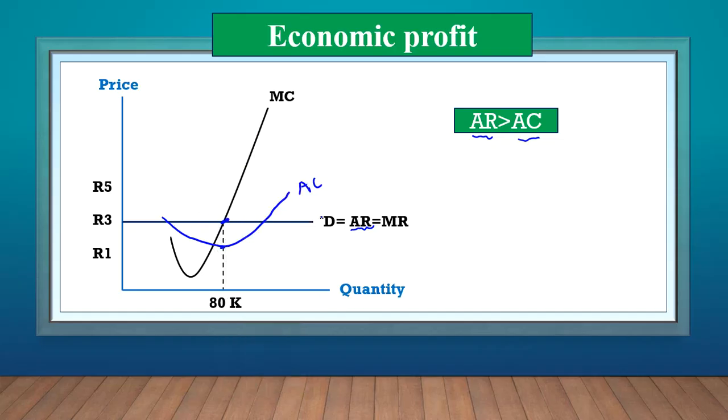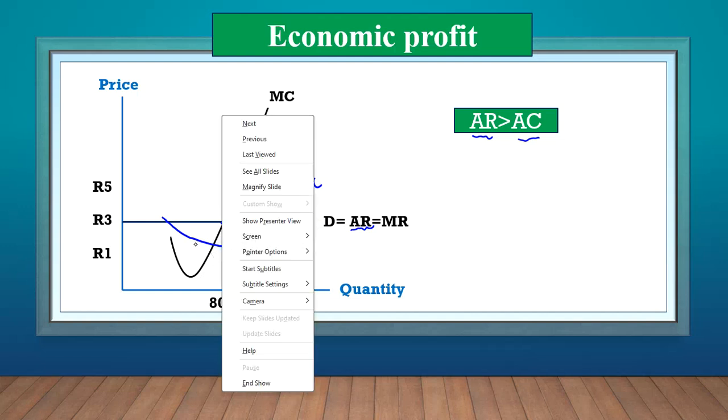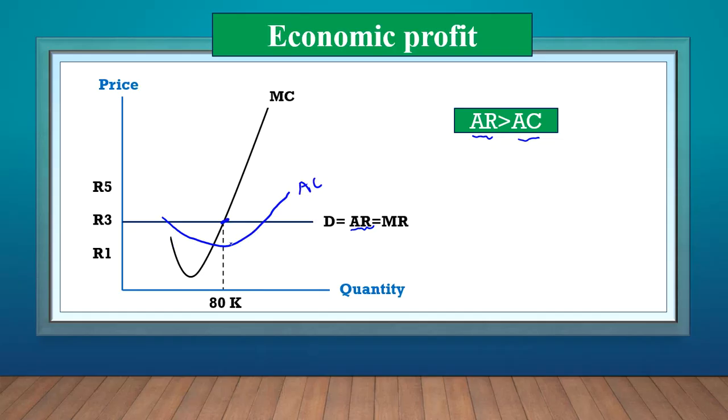In other words, the horizontal line, is above the AC at the profit maximization point. So here we are making a profit, an economic profit. And we can literally calculate this profit.